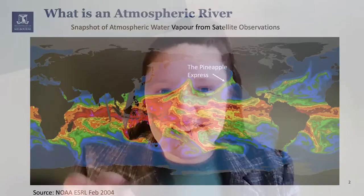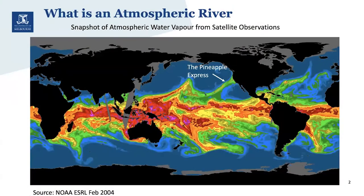I'm Kimberly Reid and I'll be talking about my PhD work on atmospheric rivers. So what is an atmospheric river? This plot here shows a snapshot of atmospheric water vapour from satellite observations over the globe. There's a lot of water vapour near the tropics and it decreases as you move towards the poles.